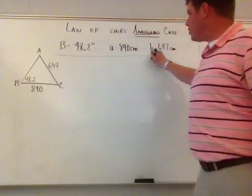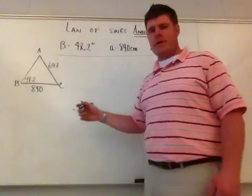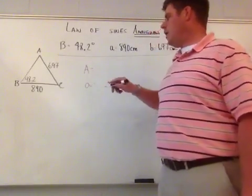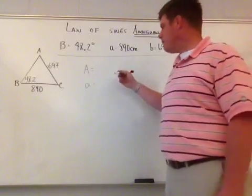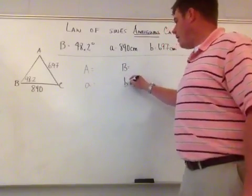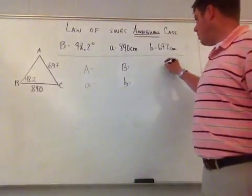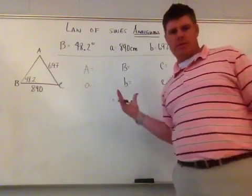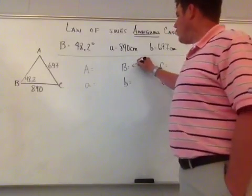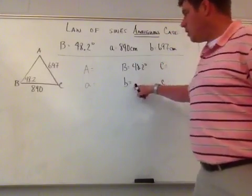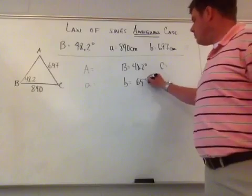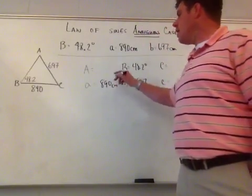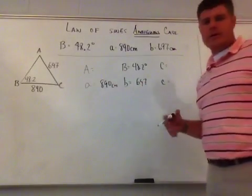I'll organize my information. The goal is to find angle A. I know angle B is 48.2 degrees, side b is 697 centimeters, and side a is 890 centimeters. I need to find angle A, angle C, and side c.